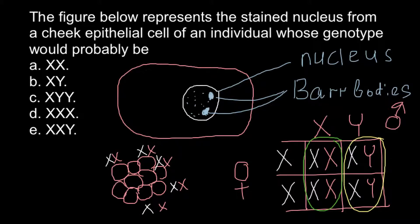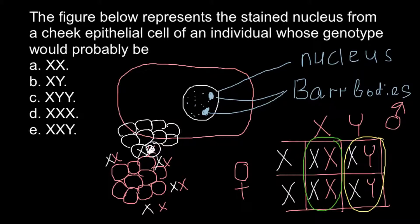In other cells this is going to be the paternal chromosome. For example, if the paternal chromosome forms a bar body or is turned off, then during mitosis that cell would divide and all following cells formed from this first cell would also have the paternal X chromosome turned off. But in other cells the maternal chromosome can be turned off, and when that cell divides, all its daughter cells would also have the maternal X chromosome turned off.